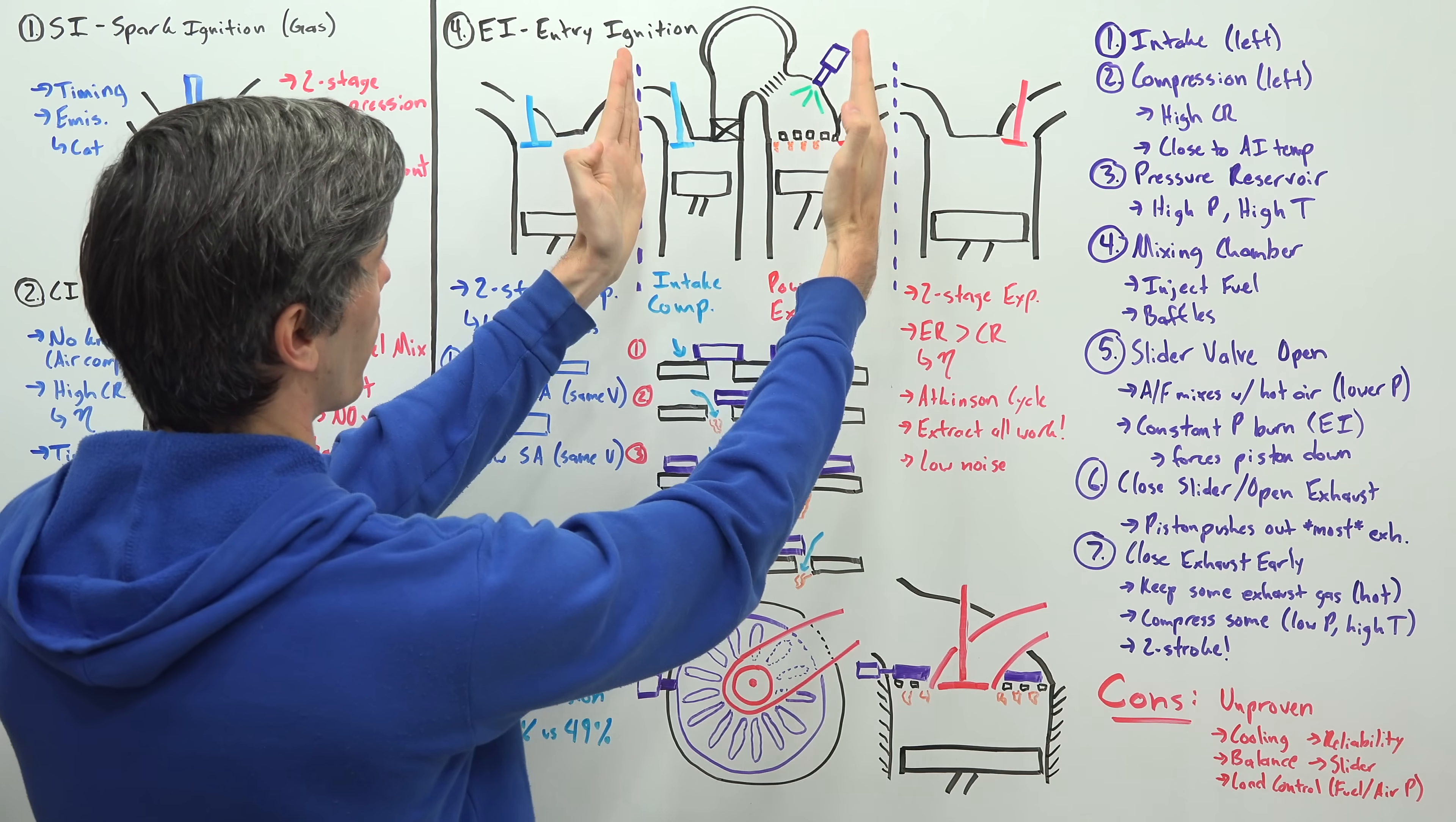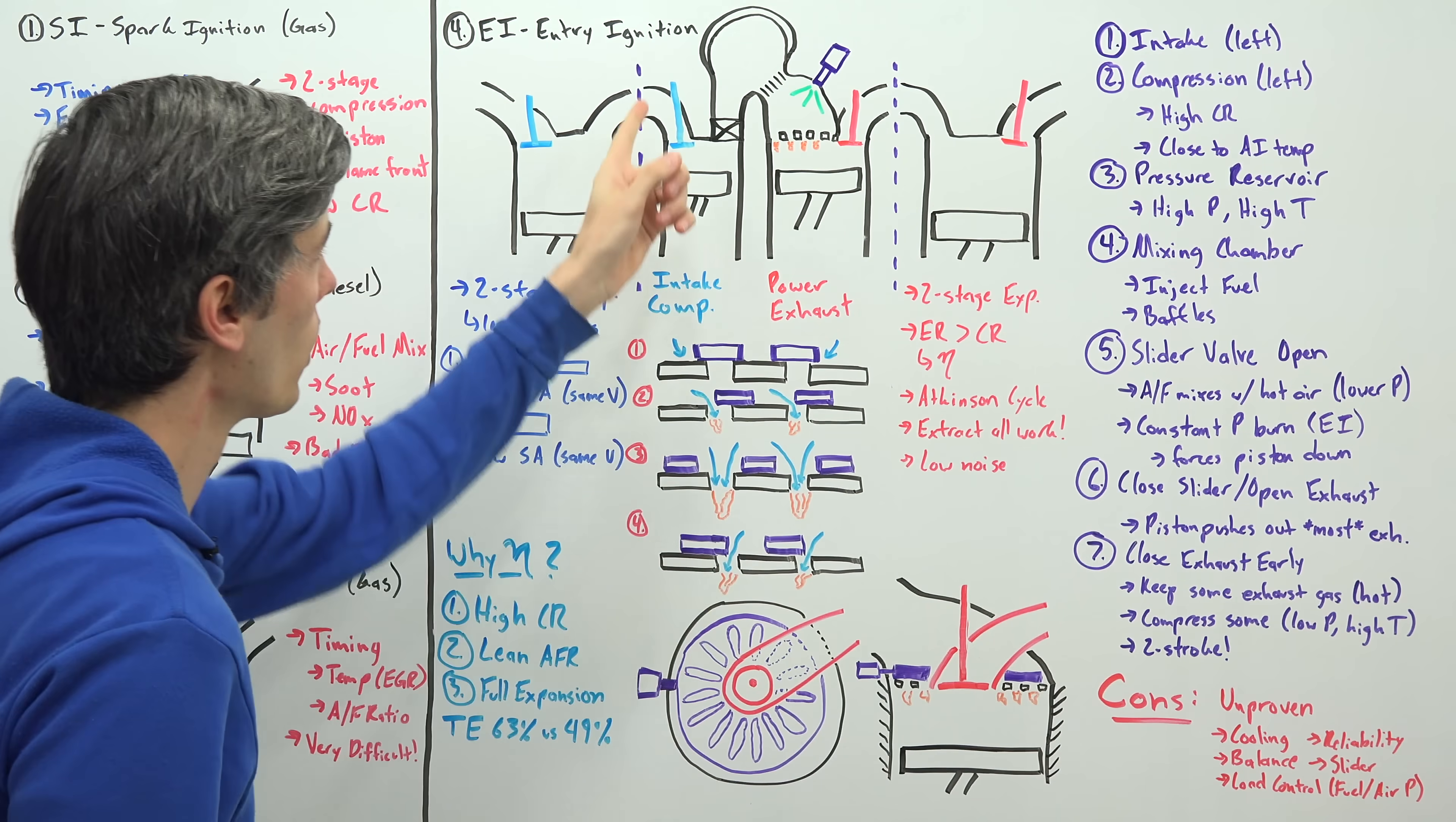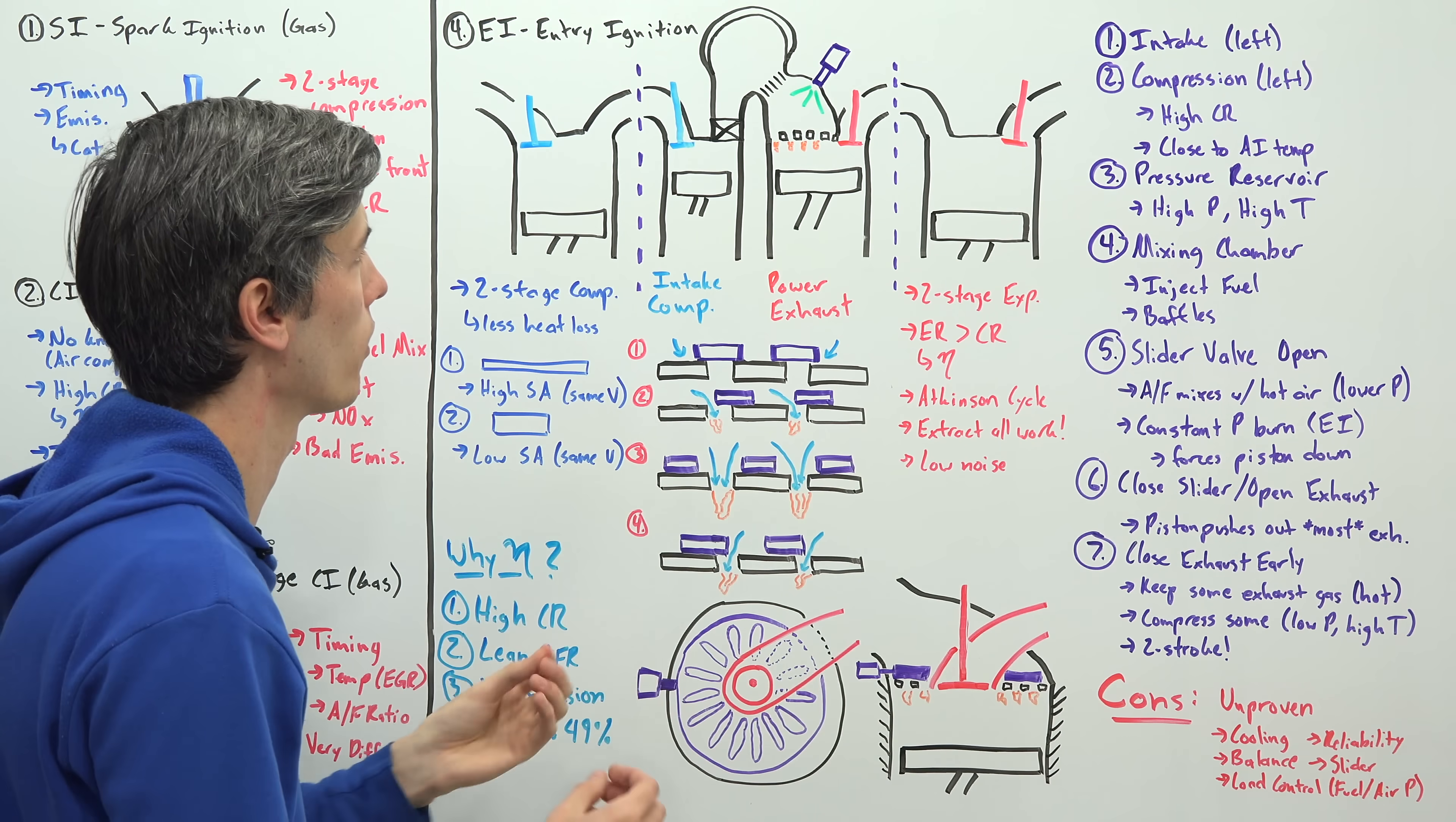So to start off, let's just look at these two cylinders in the center and we can ignore these two right here. So here's our two cylinders, both with these pistons moving up and down together. So the first thing that happens is we pull in air just like any other engine. So you pull that air in and then you compress that air. That's what this left cylinder is doing. So it has a very high compression ratio because there's no fuel in there right now.